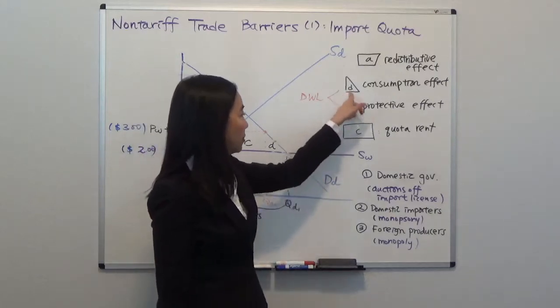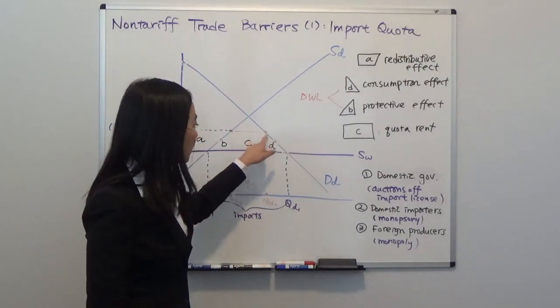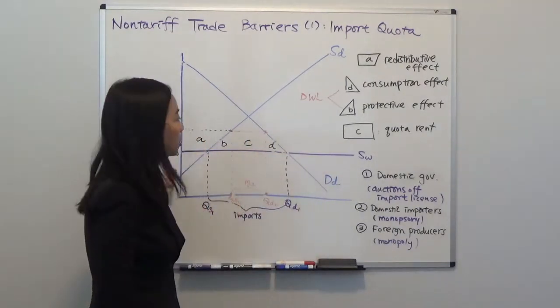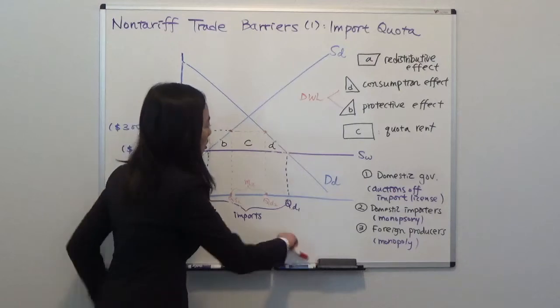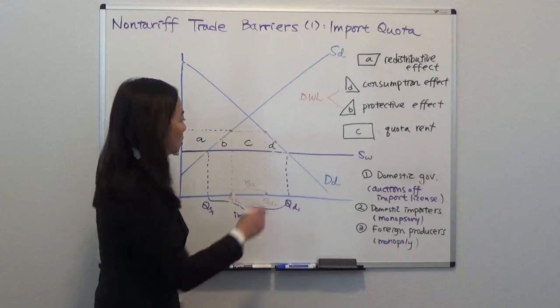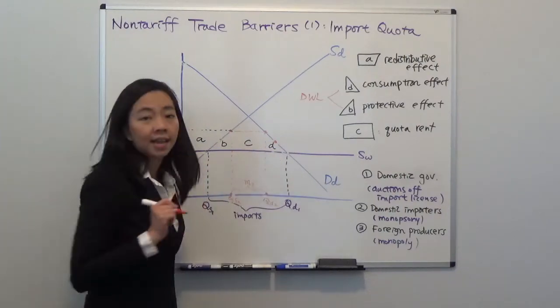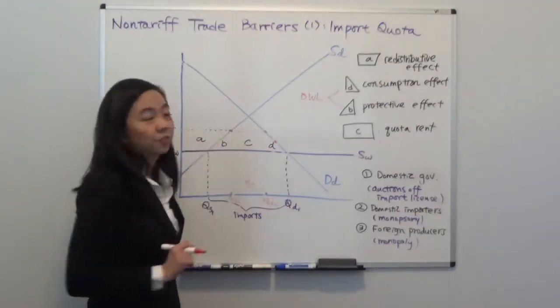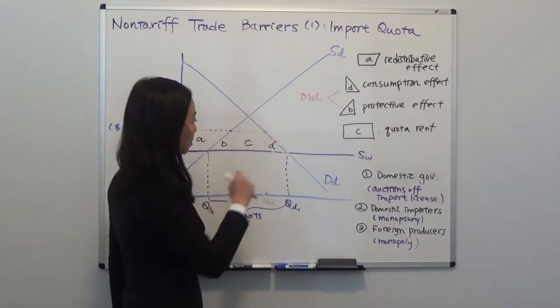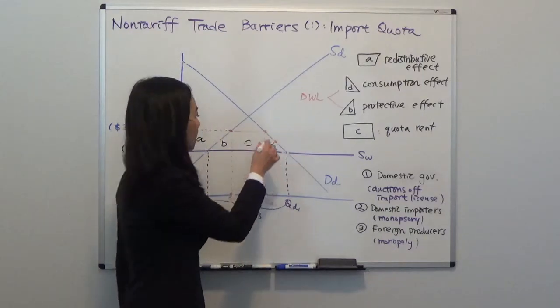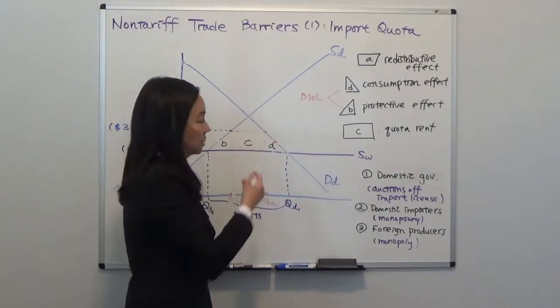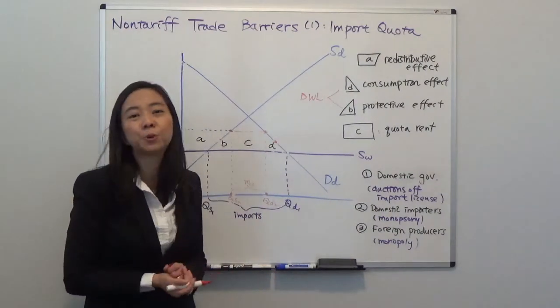And we also have area D that's consumption effect. That's the area of consumer surplus that's lost due to the import quota. So previously the price you're willing to pay is higher and the price was PW, so you will buy the product and get some consumer surplus. But now because of the import quota, the price has gone up from PW to PW plus T, and therefore you don't buy the product anymore because your willingness to pay is lower than the current price. So consumption effect is the consumer surplus that's lost because of import quota.